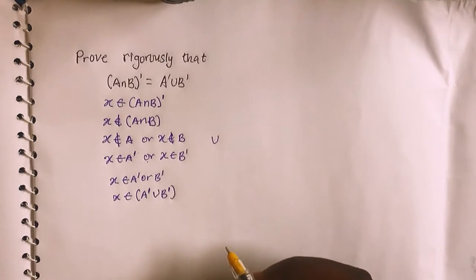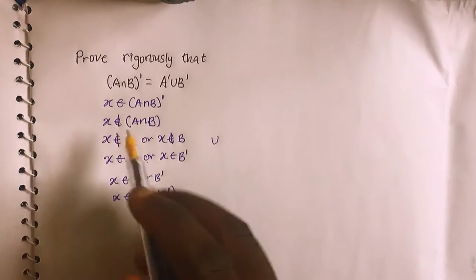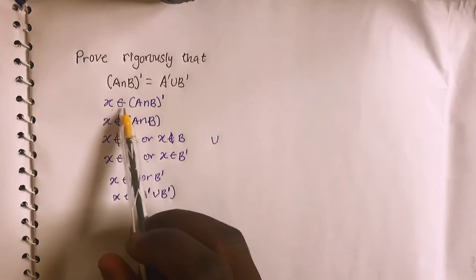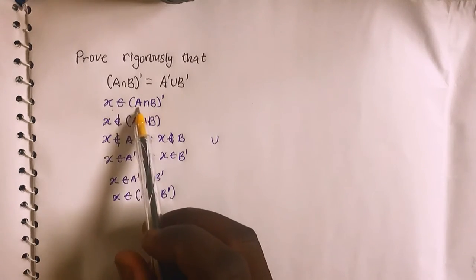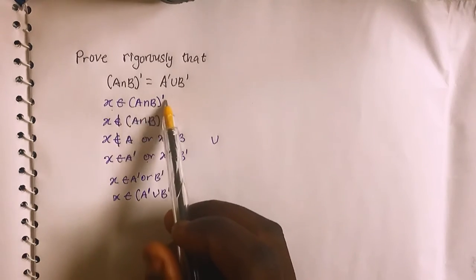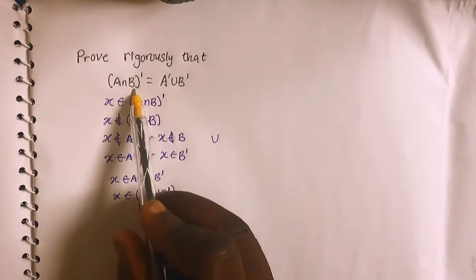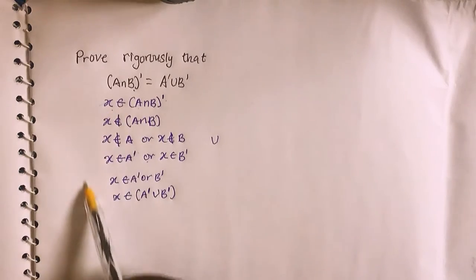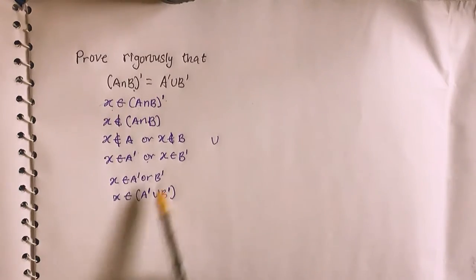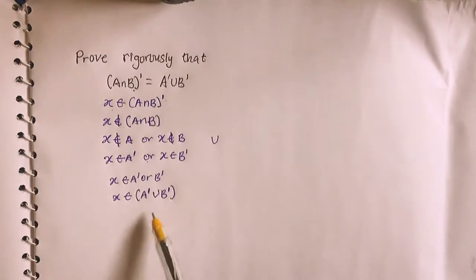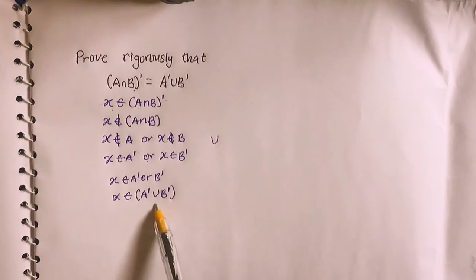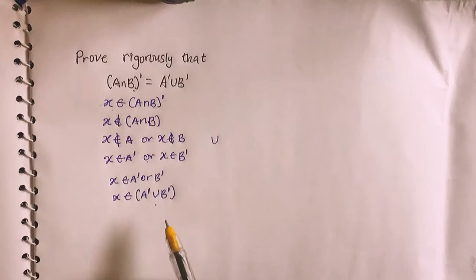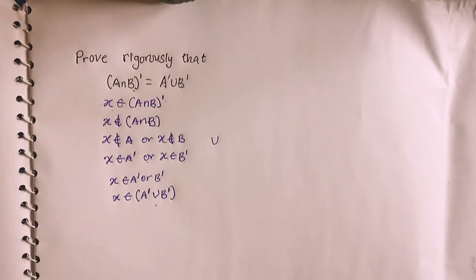It's very simple. Since I've already shown x to be a member of (A intersection B) complement, that means x must also be a member of A complement union B complement. So kindly like and share my videos and don't forget to subscribe as well. Thanks!